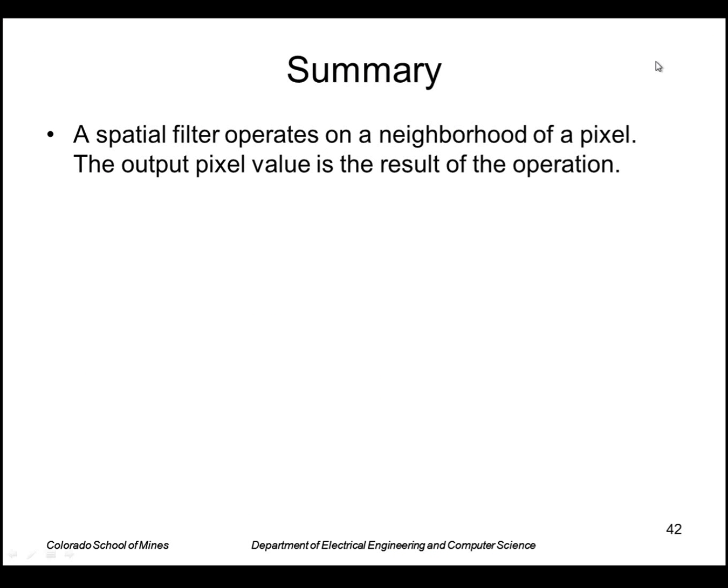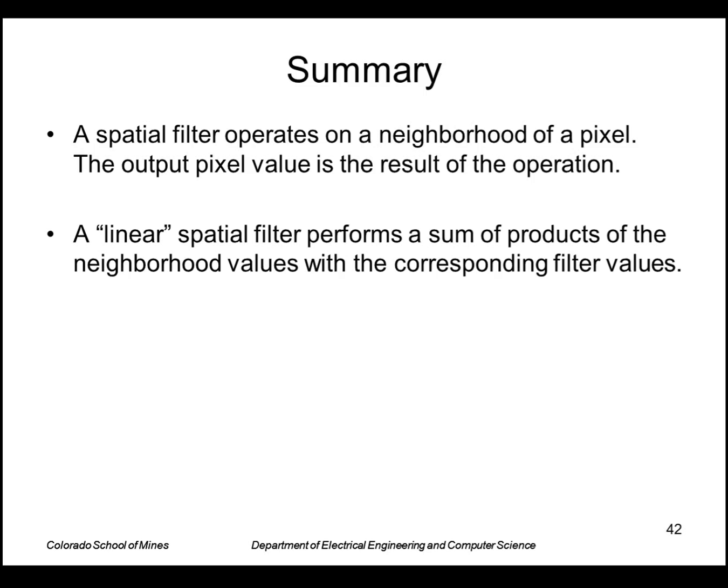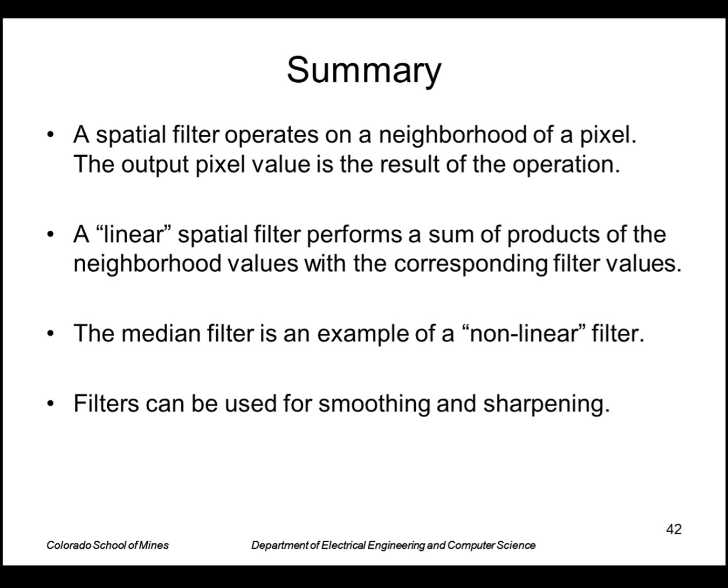In summary, a spatial filter operates on a neighborhood of a pixel. The output pixel value is the result of the operation. A linear spatial filter performs a sum of products of the neighborhood values with the corresponding filter values. The median filter is an example of a non-linear filter. And filters can be used for smoothing and sharpening images.